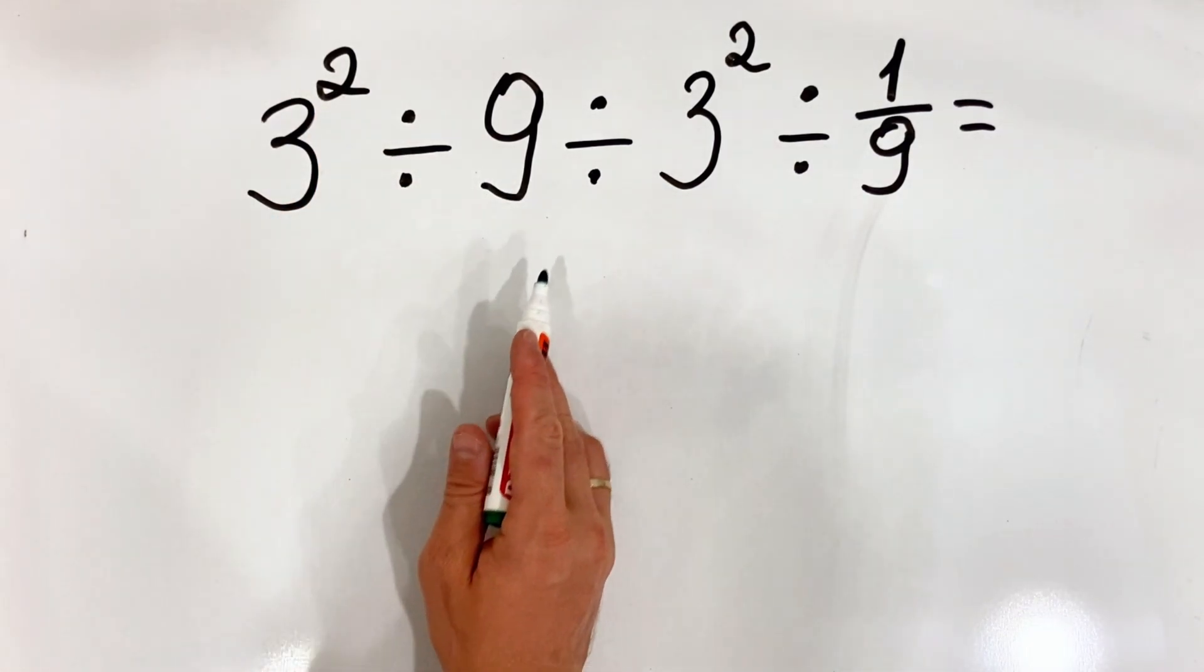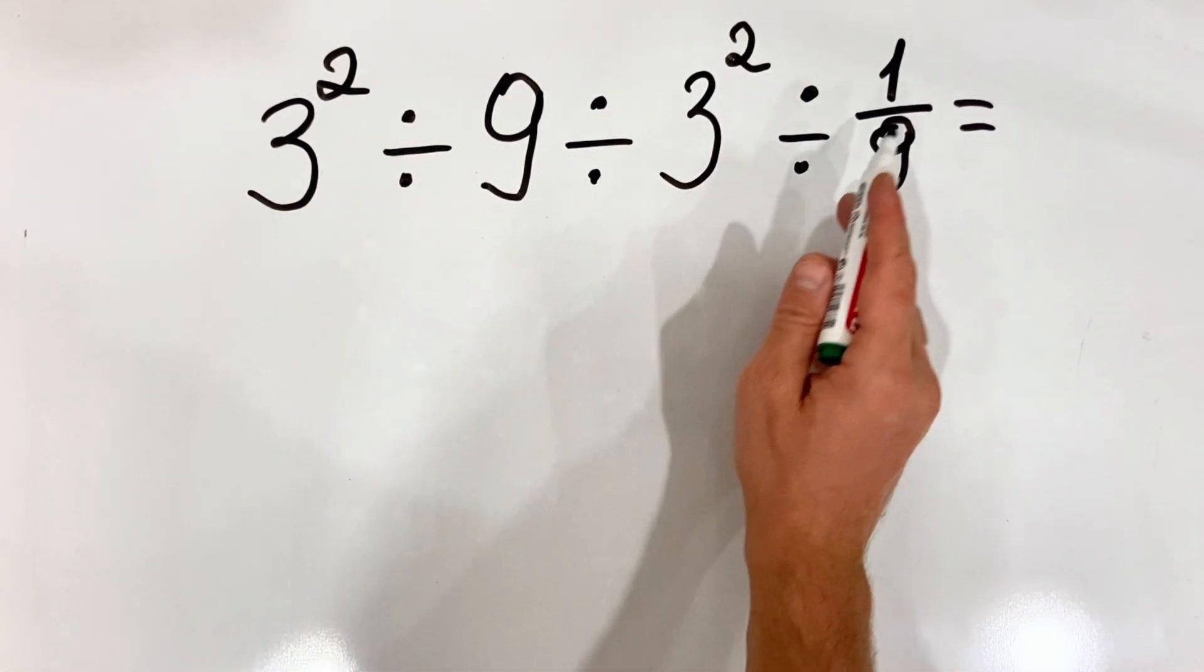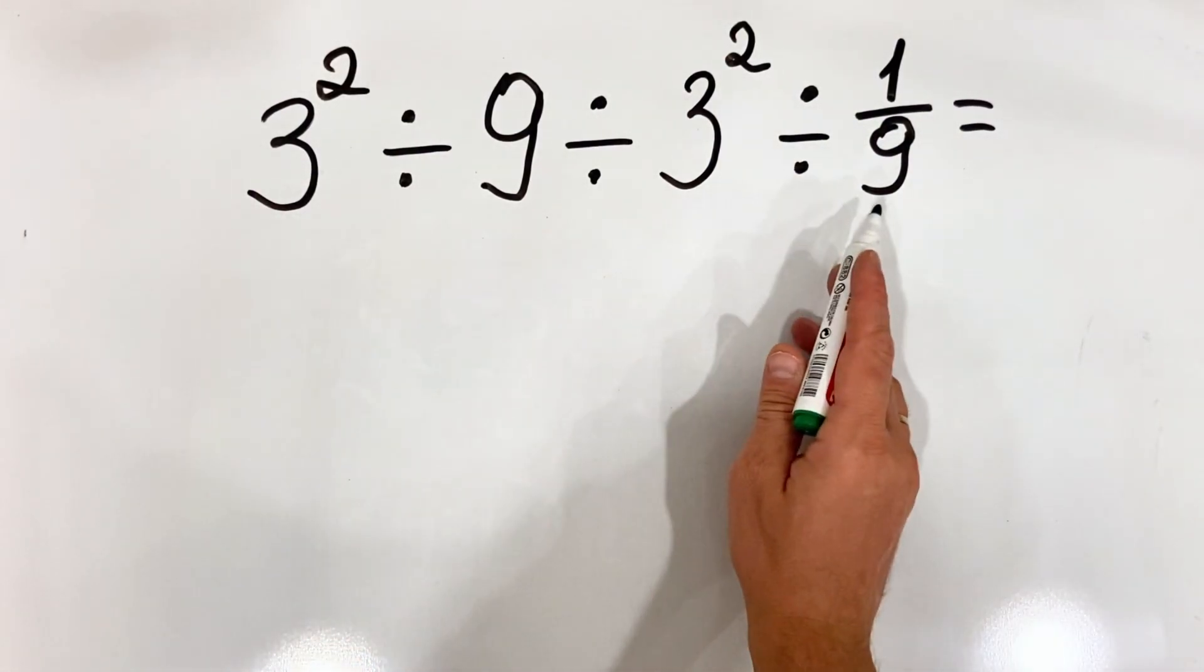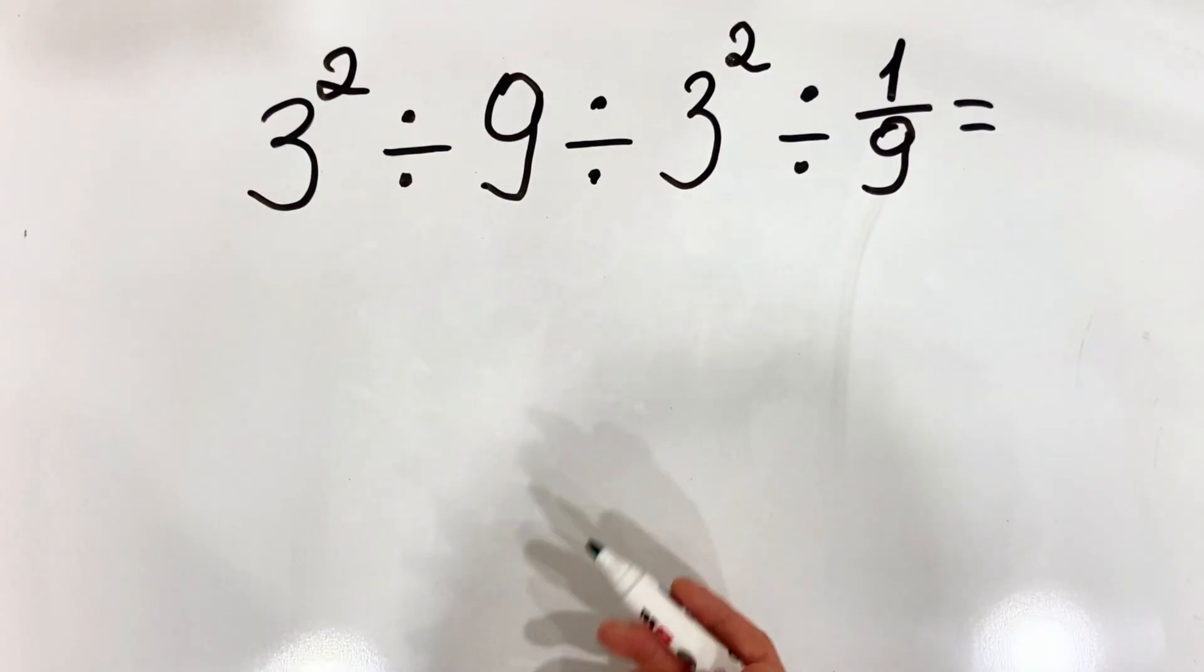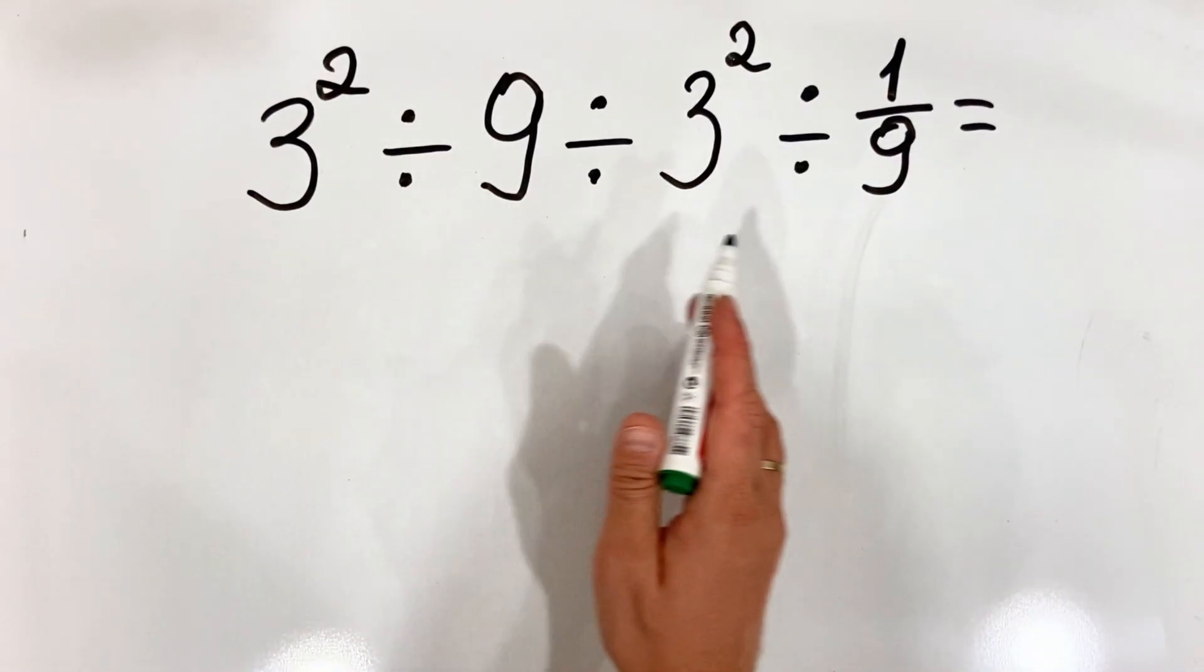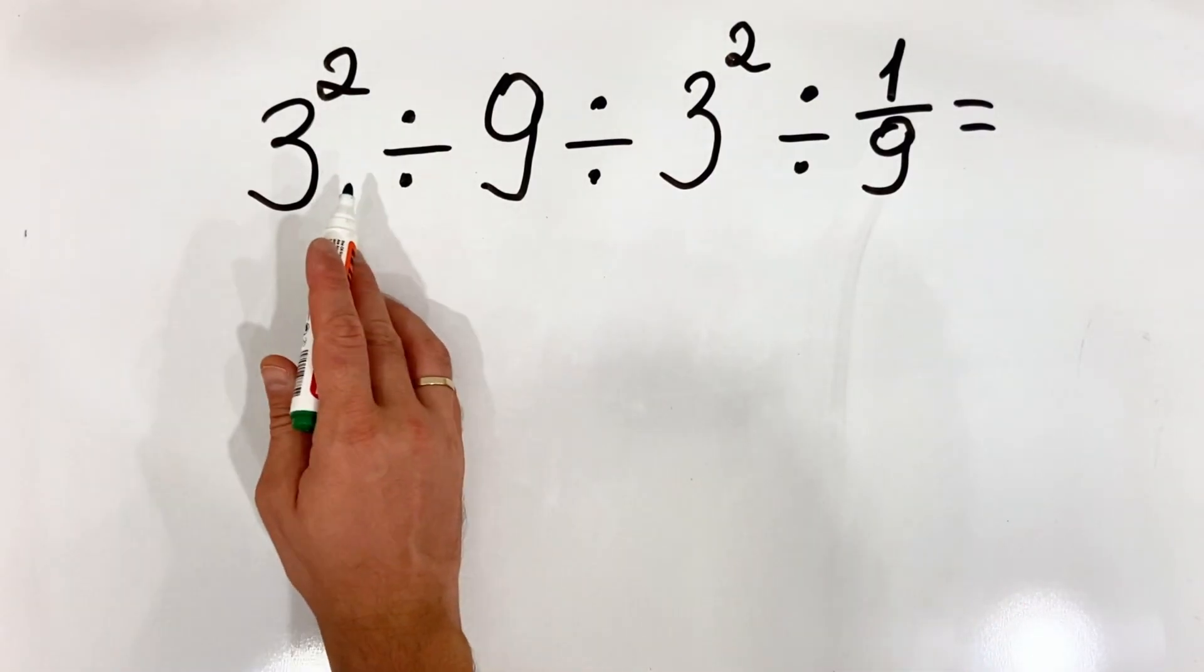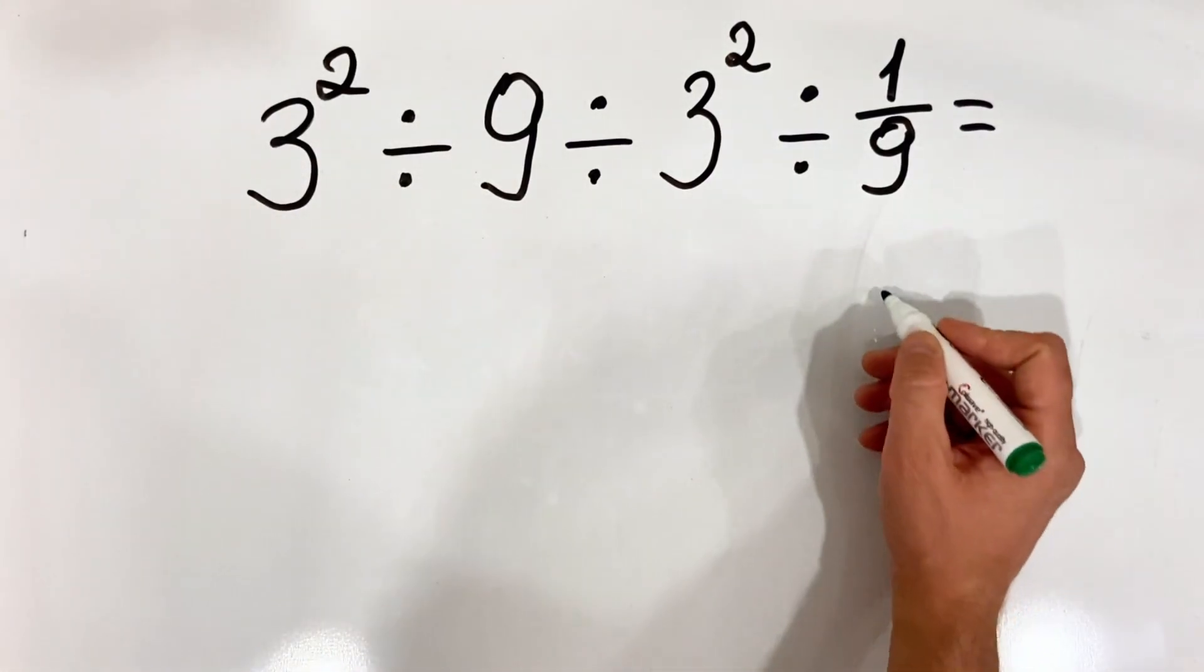3 squared divided by 9 divided by 3 squared and divided by 1 over 9. To solve this equation, one must remember the order of operations that when we have multiplication or division, we should do the operation from left to right.